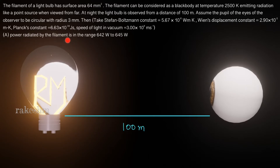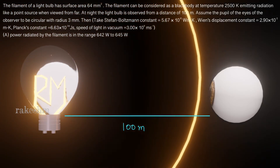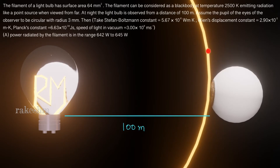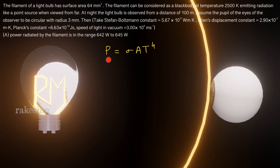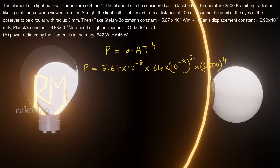The first statement is: power radiated by the filament is in the range 642 watts to 645 watts. The power emitted by the black body is sigma × A × T⁴. Stefan-Boltzmann constant sigma is 5.67 × 10⁻⁸. The area of the filament is 64 millimeter square, converting to meter square: 64 × 10⁻⁶ m². The temperature is 2500 Kelvin, so we compute 2500⁴.